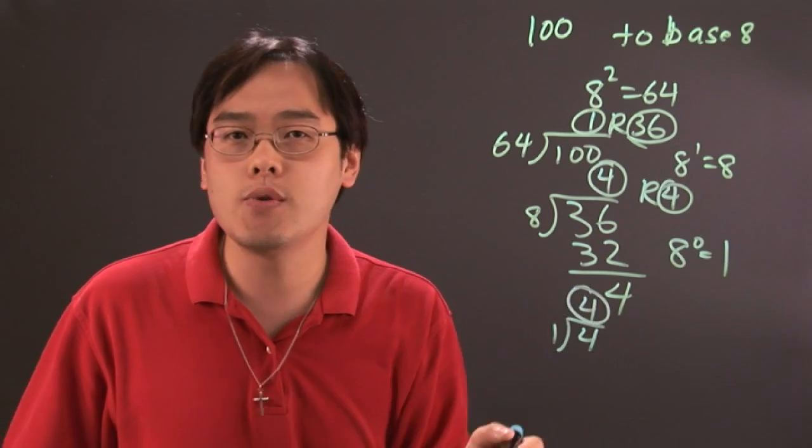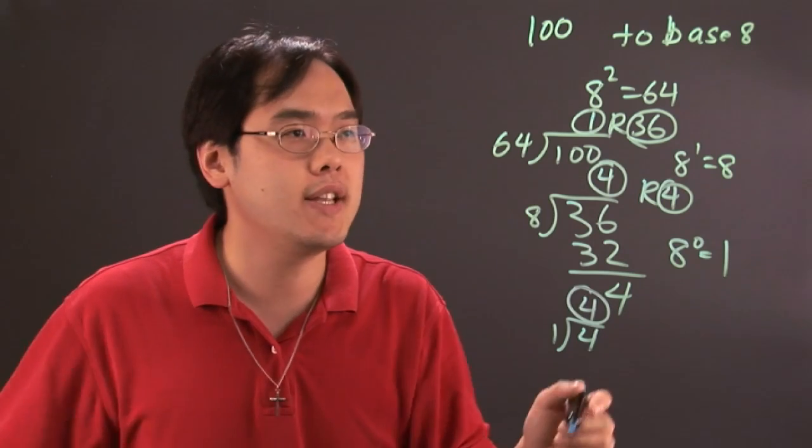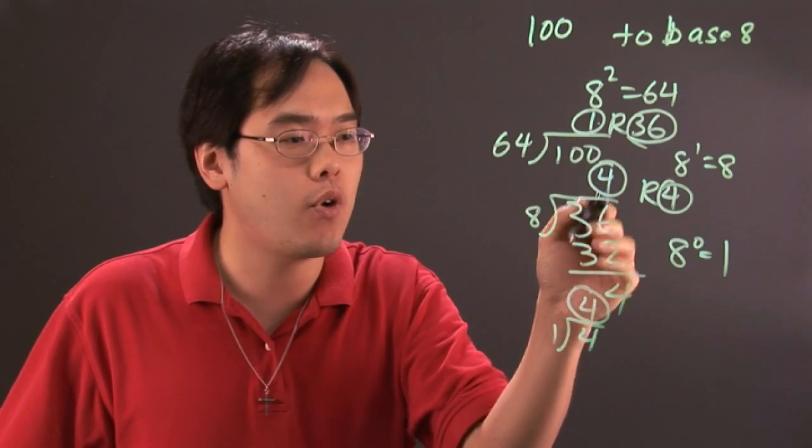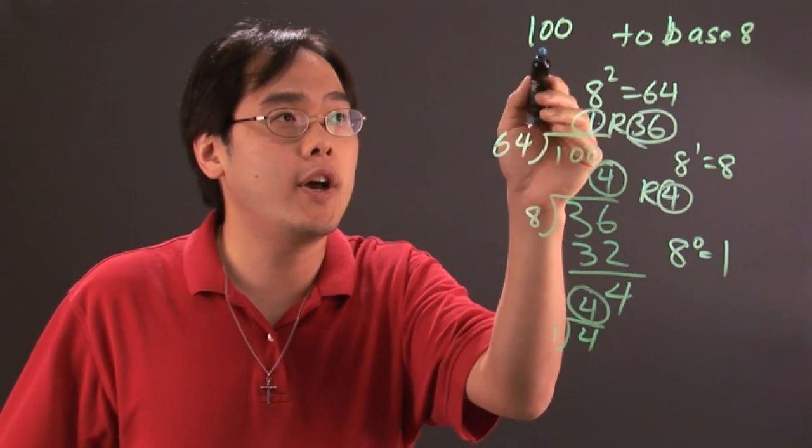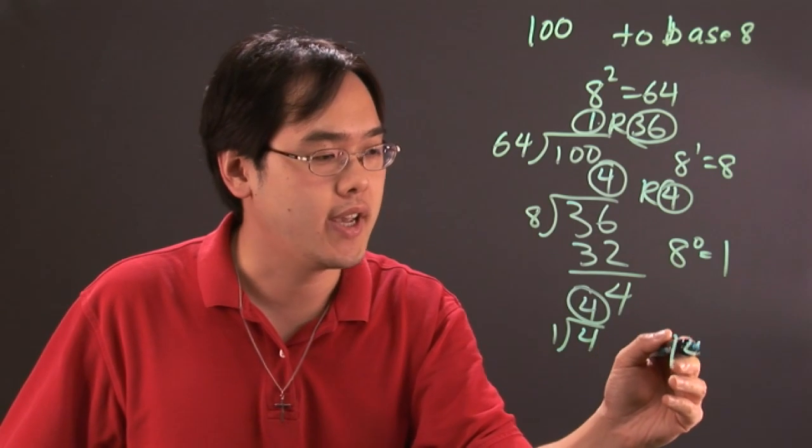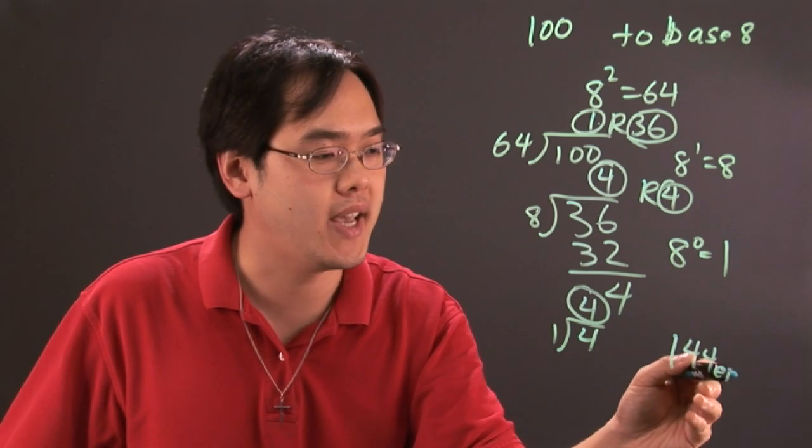So what we're going to do next is we're going to outline all the digits that we have. So the digits that we circled are 1, 4, and 4. So that means 100 to base 8 is actually going to be 144 in base 8 land.